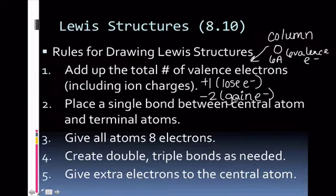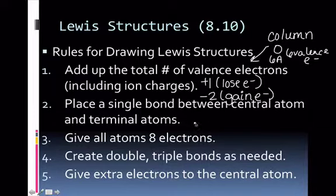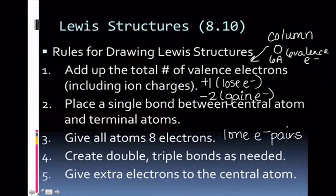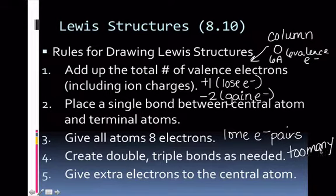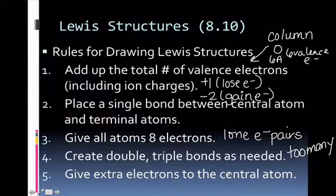Add to your total when you have a negative charge. Once you've figured out how many valence electrons you have, place a single bond between the central atom and all the terminal atoms. Then make sure everybody has eight electrons around them by giving lone electron pairs. Then create double or triple bonds as needed if you have too many electrons. If you need more electrons and weren't able to fit as many as needed, always give those extra electrons to the central atom.